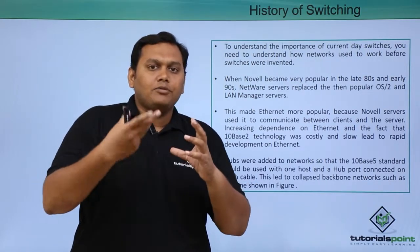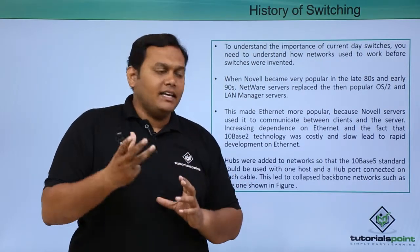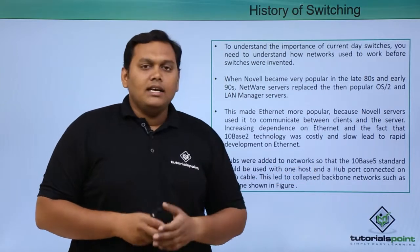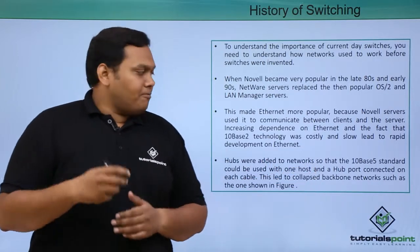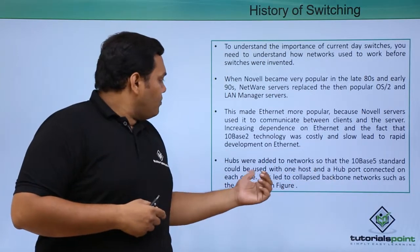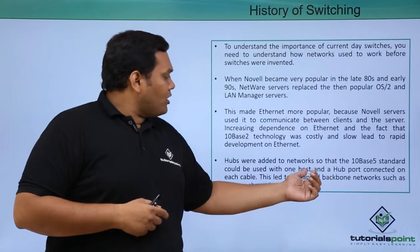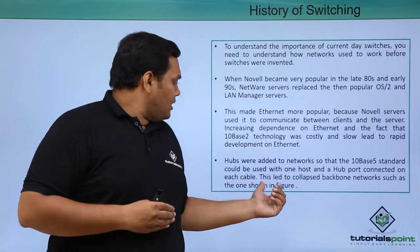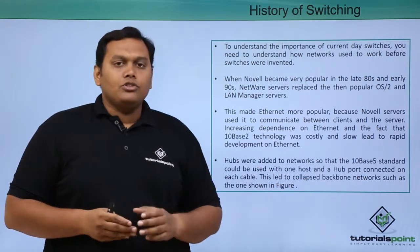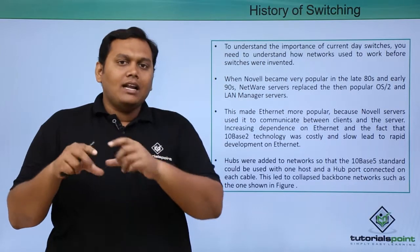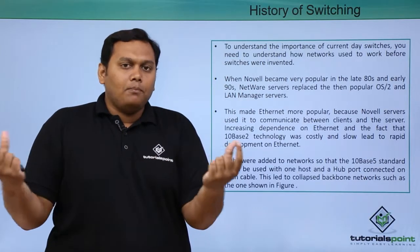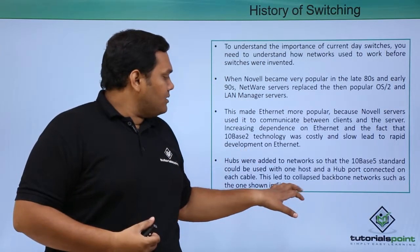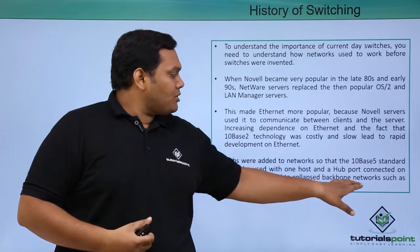Hubs were added to the network so that the 10Base-5 standard could be used, with one host per hub port connected on each cable. This led to a collapsed backbone network.